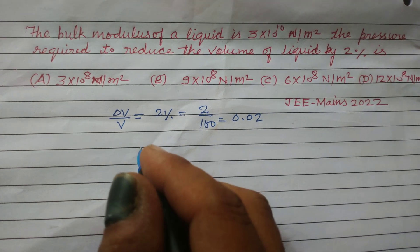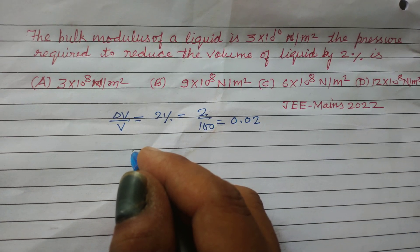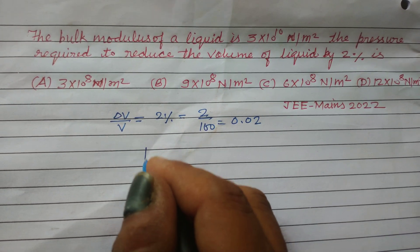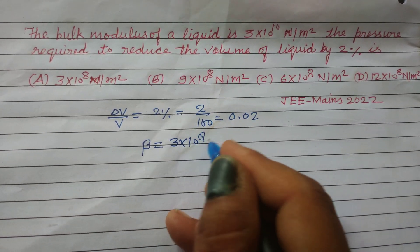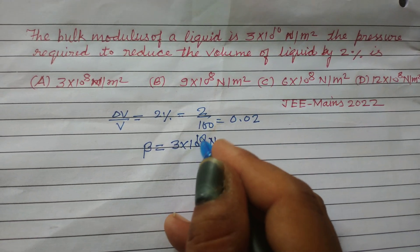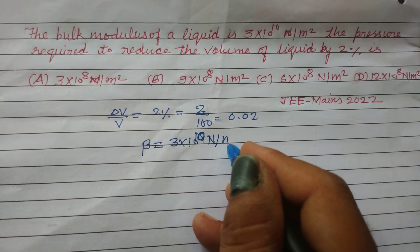And we want to find out... the bulk modulus is given here, β = 3 × 10^10 N/m².